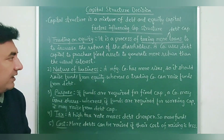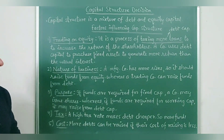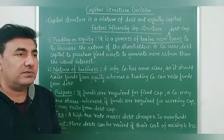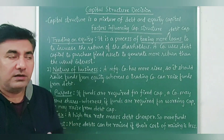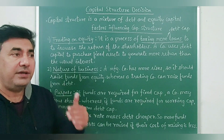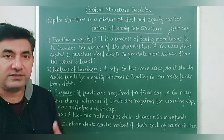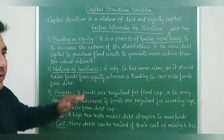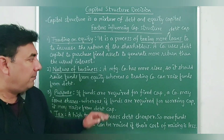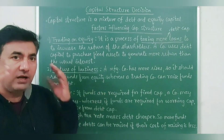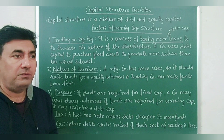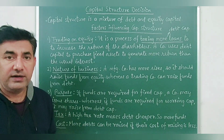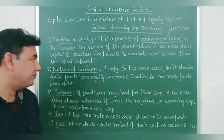The second factor is nature of business. A manufacturing company has more risk, so it should raise funds from equity share capital, whereas a trading company can raise funds from debt capital. A manufacturing company has more risk because it produces goods that may flourish or flop in the market. So a company with more risk raises funds through equity capital, while a company with less risk can raise funds through debt capital.